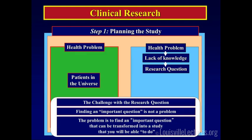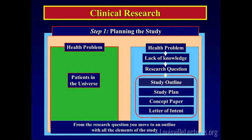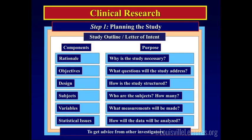After the research question, it's time to write a one or two page study outline, or letter of intent. Whether you're going all the way to an NIH proposal with specific aims or just starting out, it's always one to two pages that tell the story. In these two pages — essentially a mini protocol — you say what is your rationale, why is the study necessary, what is the objective, and what is the question you want to address.